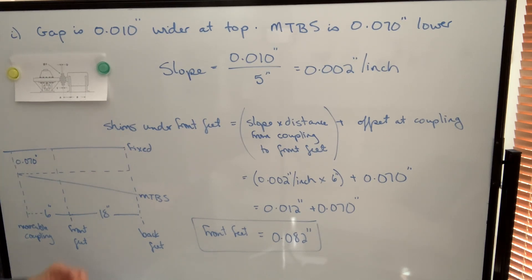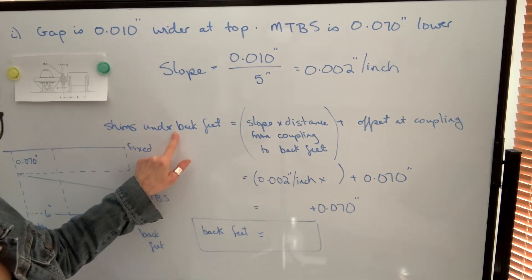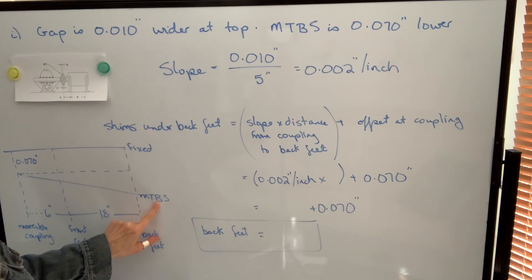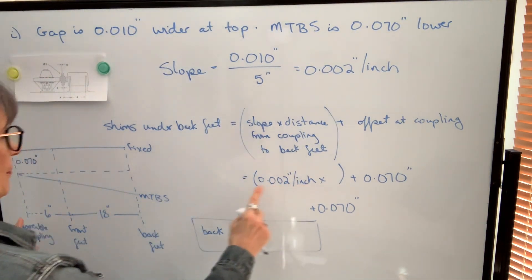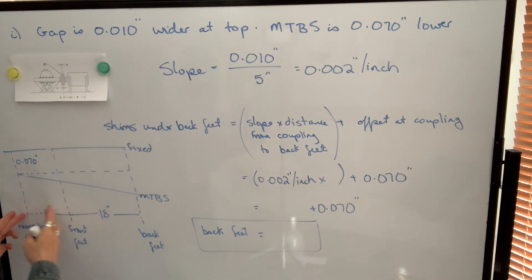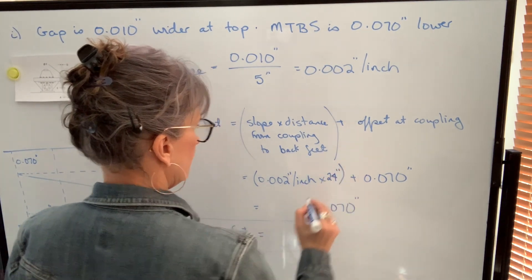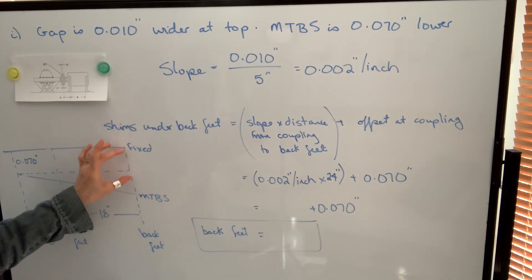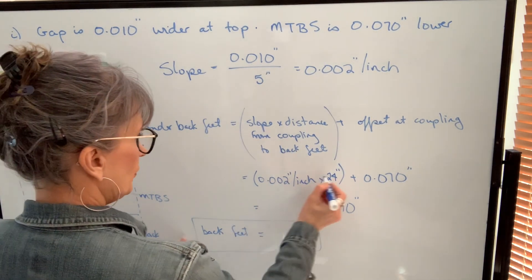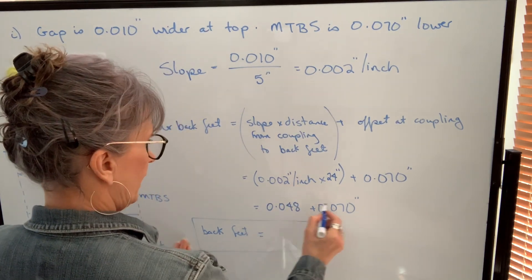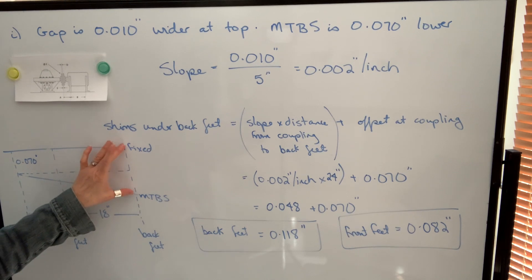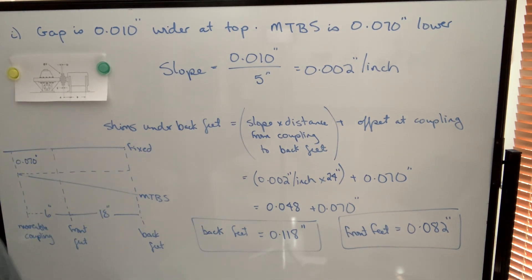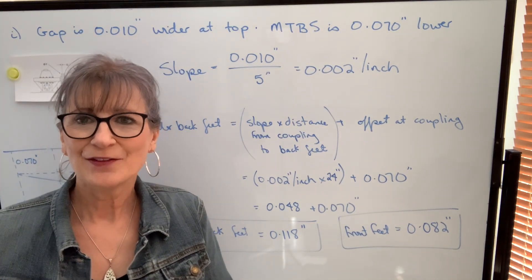We do almost exactly the same thing to find the shims required under the back feet. The formula is the same — we just change the distance to the total from the movable coupling to the back feet. The slope is still two-thousandths of an inch per inch, but now we multiply over twenty-four inches: two-thousandths times twenty-four gives forty-eight-thousandths, plus seventy-thousandths equals one-hundred-eighteen-thousandths. So we need one-hundred-eighteen-thousandths under the back feet and eighty-two-thousandths under the front feet to correct both angular and offset misalignment at once.